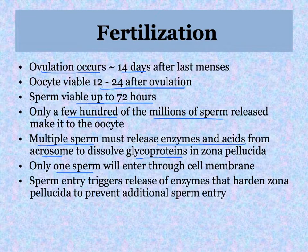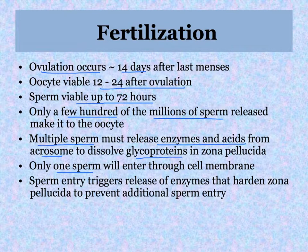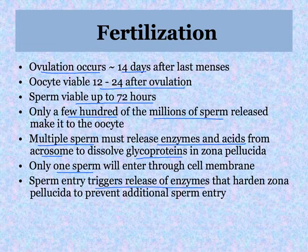Multiple sperm must all work together to release enzymes and acids contained in the acrosome — on the very end of the head of the sperm — to dissolve a glycoprotein layer called the zona pellucida that surrounds the egg cell. Only one sperm will get through and fertilize the egg, but multiple sperm are needed to cut a hole. A man with low sperm count may be infertile because not enough sperm survive to reach the egg. When that sperm enters the oocyte, it triggers enzymes that harden the zona pellucida so no additional sperm can enter — we only want 23 chromosomes from the sperm to mix with the 23 in the oocyte.